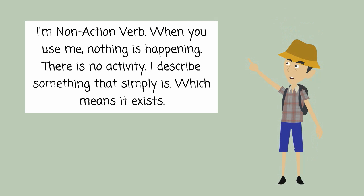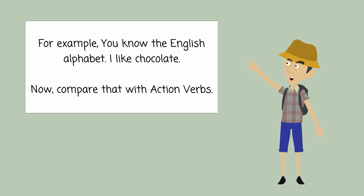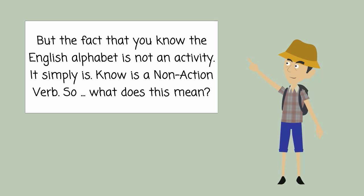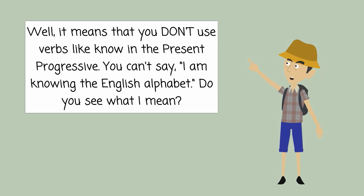A non-action verb — when you use me, nothing is happening. There is no activity. I describe something that simply is, which means it exists. For example: you know the English alphabet; I like chocolate. Compare that with action verbs: you're reading this sentence, I'm talking, you're listening to me — all those activities are going on right now. But knowing the English alphabet is not an activity — it simply is. 'Know' is a non-action verb, so you don't use verbs like 'know' in the Present Progressive. You can't say 'I am knowing the English alphabet.'